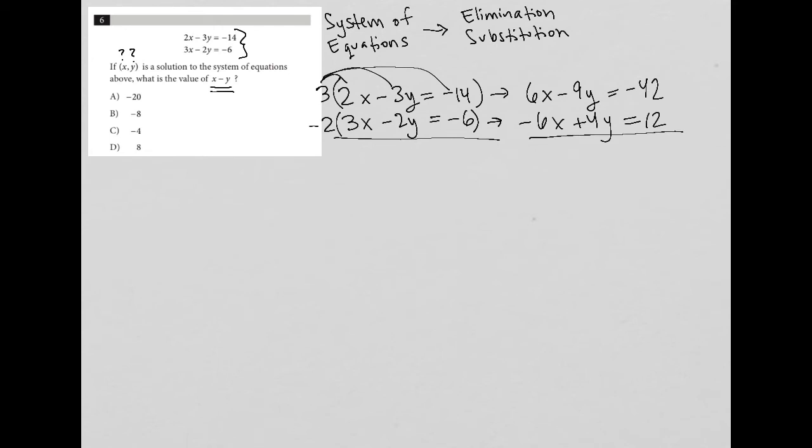And then negative 9Y plus 4Y is negative 5Y. And then negative 42 plus 12 equals negative 30. I can go on to divide both sides by negative 5, leaving me with Y equals 6.